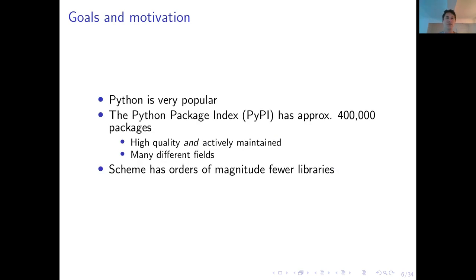Now, why did we choose to interface to Python? Python is very popular. The Python Package Index has approximately 400,000 packages as of today. And some of them are very high quality and are also actively maintained, as some businesses depend on them. And you have access to packages for very various fields, such as quantum mechanics or low-level networking protocols, all within the Python Package Index. On the other hand, Scheme has orders of magnitude fewer libraries. And so it would be a very good advantage for us to have access to the whole of the Python Package Index from within Gambit Scheme.